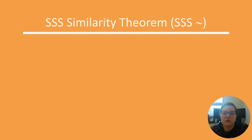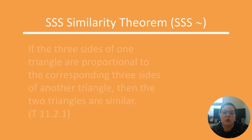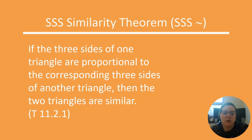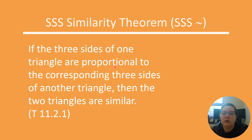Our second theorem is the side-side-side similarity theorem, which should sound very similar to the side-side-side congruence. If three sides of one triangle are proportional to the corresponding three sides of another triangle, then the two triangles are similar. Notice the difference: for similar triangles the sides just need to be proportional. If you have proportional sides, then the corresponding angles will still be congruent.